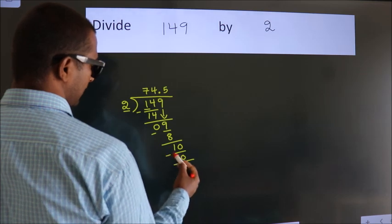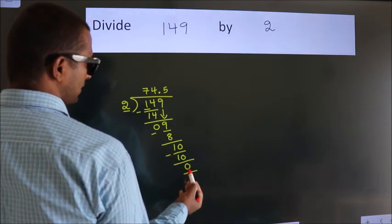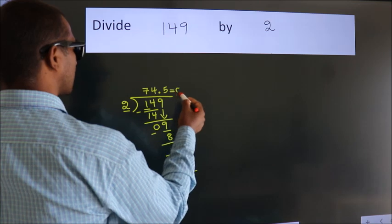Now we subtract, we get 0. We got remainder 0. So this is our quotient.